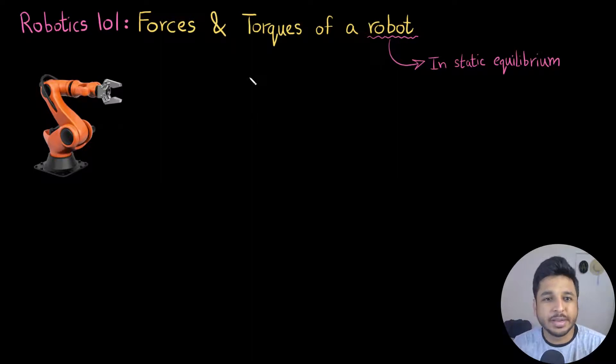Welcome back to Engineering Simplified. In this video, which is part of the Robotics 101 video series, I am going to talk about the forces and torques of a robot, more specifically when the robot is in static equilibrium. What it means is when the robot is standing stationary, that is when the robot is said to be in static equilibrium.